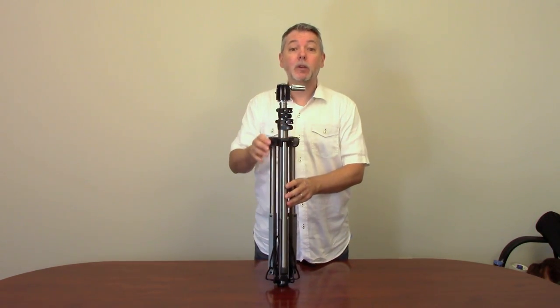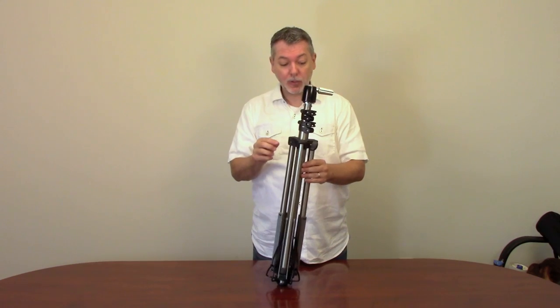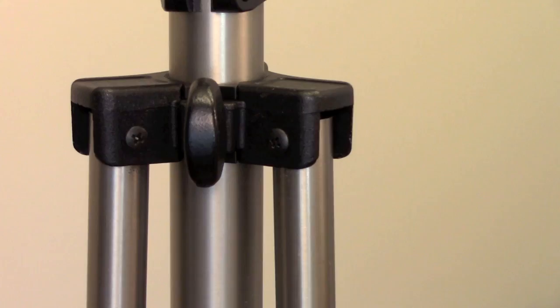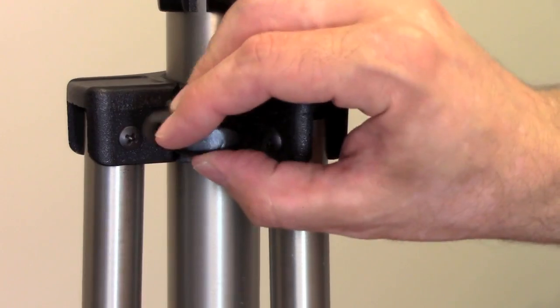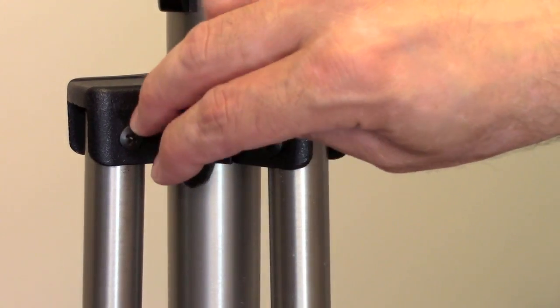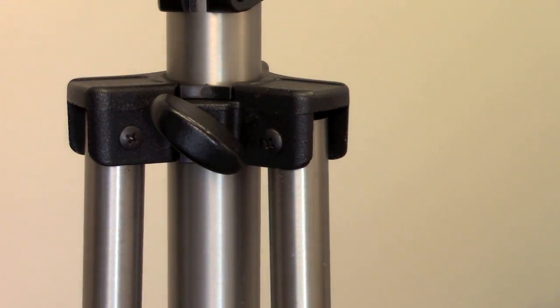The first thing to do is loosen the adjustment knob which is located right here. This will allow you to pull down the legs and push down on this middle part as I will demonstrate.